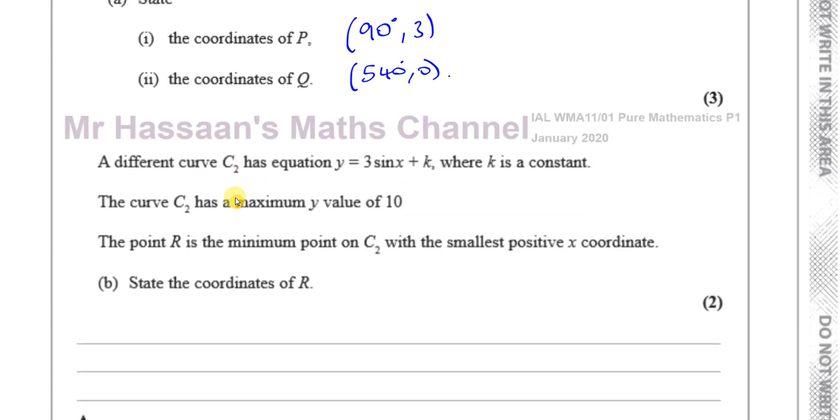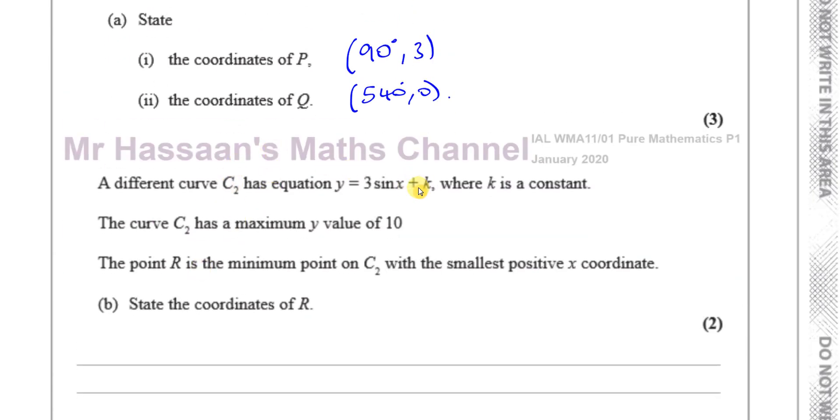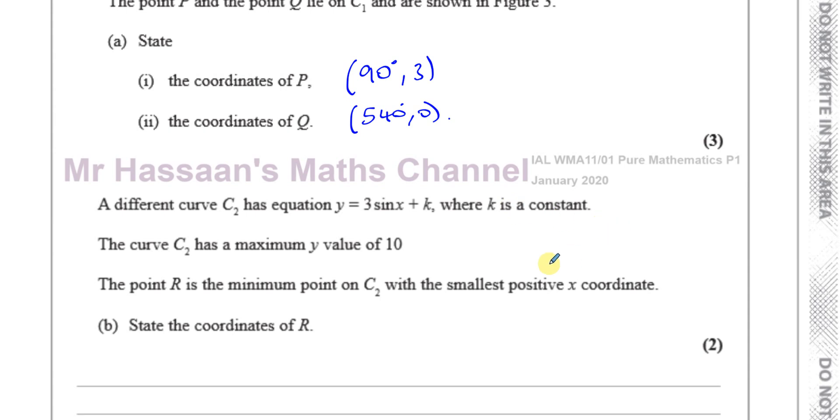Now part B. It says a different curve C2 has equation y = 3sin x + k where k is a constant. So something has been added to the whole function. The original function f(x) has been multiplied by 3 and something's been added to it, which causes a vertical translation - it moves up or down depending if k is positive or negative. The curve C2 has a maximum y value of 10.